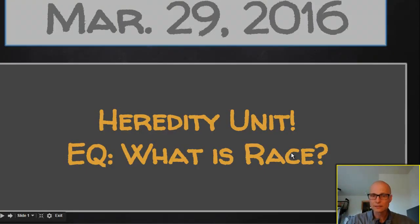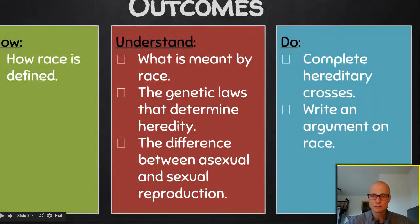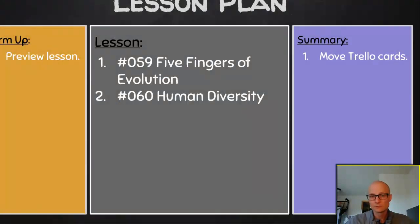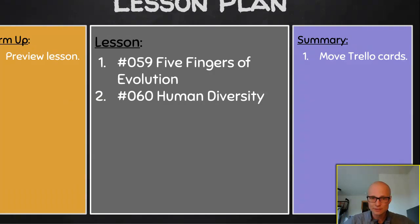Tuesday, March 29th. It's the second day of the week. Schedule rotated, same outcomes. If you're on task, you would be watching the Five Fingers video — about five minutes long — along with a five-question quiz on each of the five fingers, and then move on to Human Diversity. You should be able to accomplish both of those today, no problem.